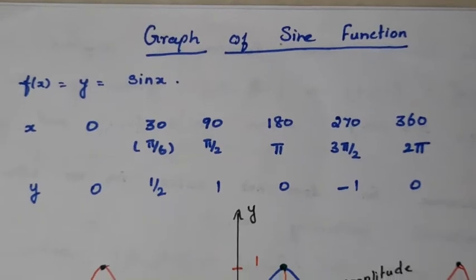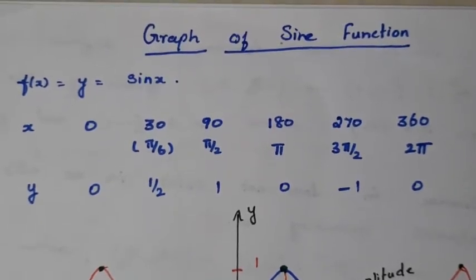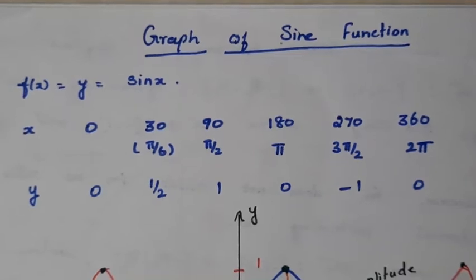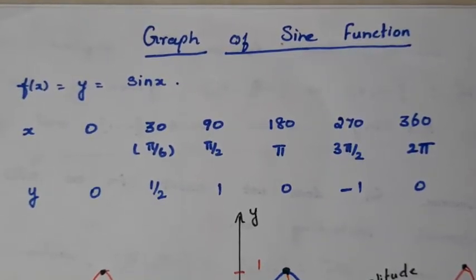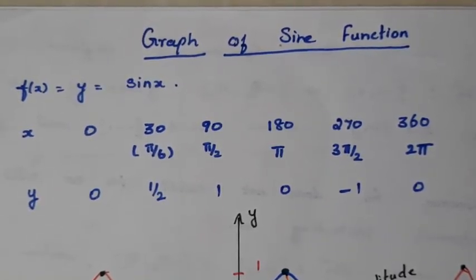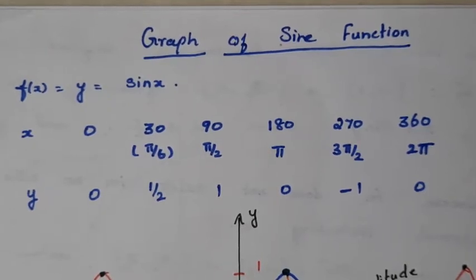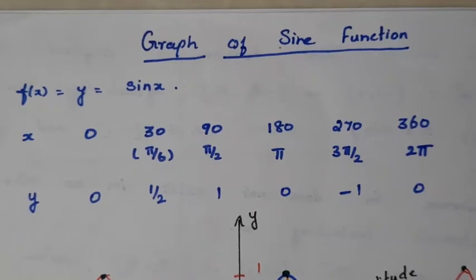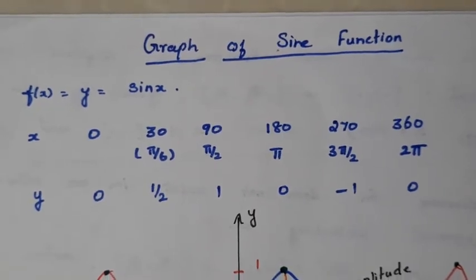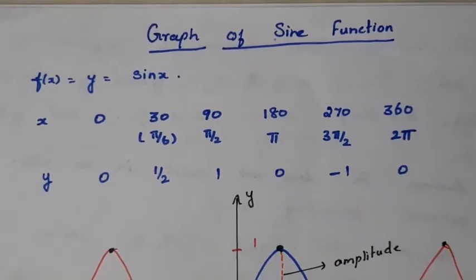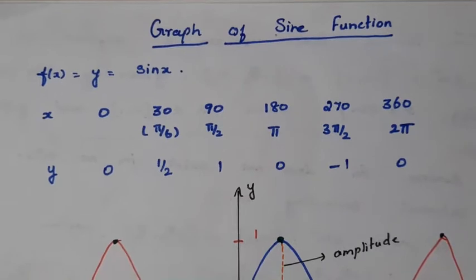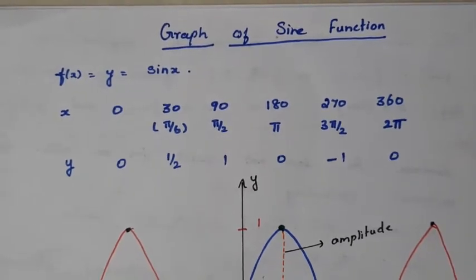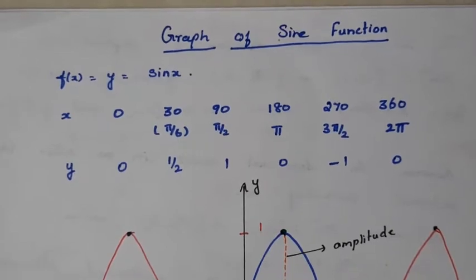Now let us see how to draw the graph of a sine function. The domain of a sine function is the entire real numbers R, and its range is the closed interval minus 1 to plus 1. To draw the graph, the domain values — that is the x values — are taken along the x axis, and the range, that is the image, should be taken along the y axis.